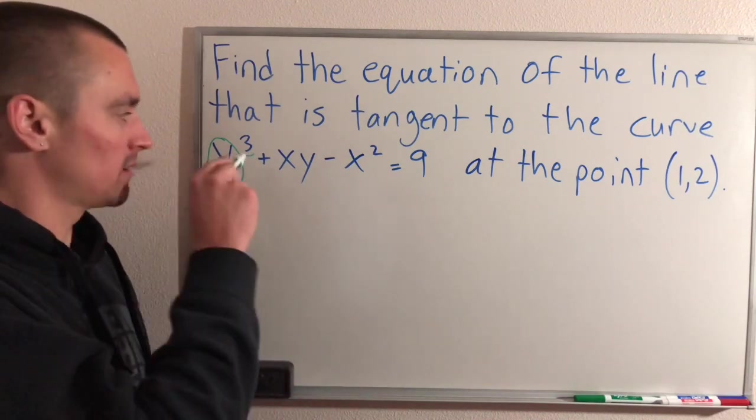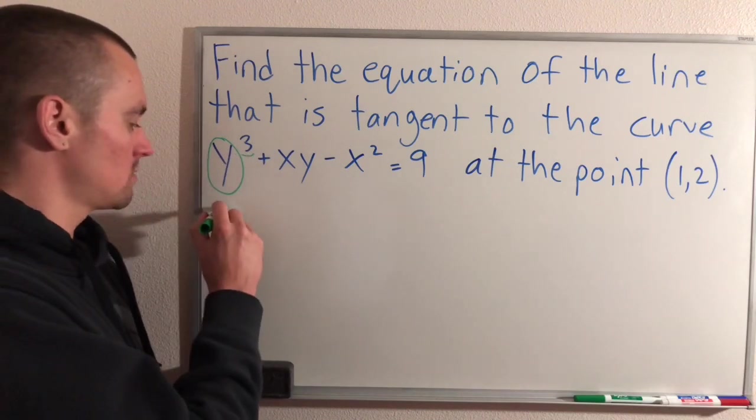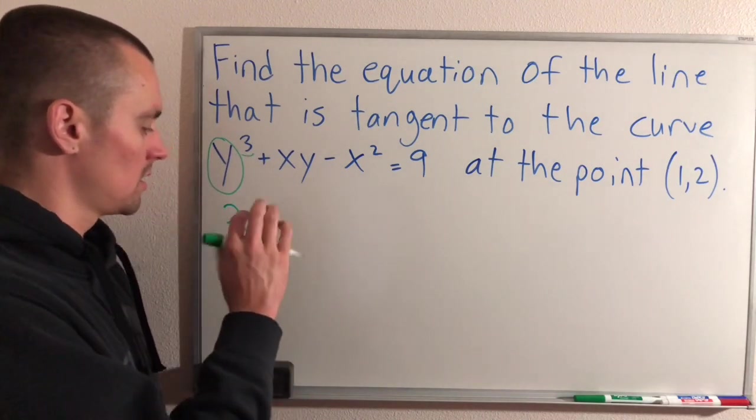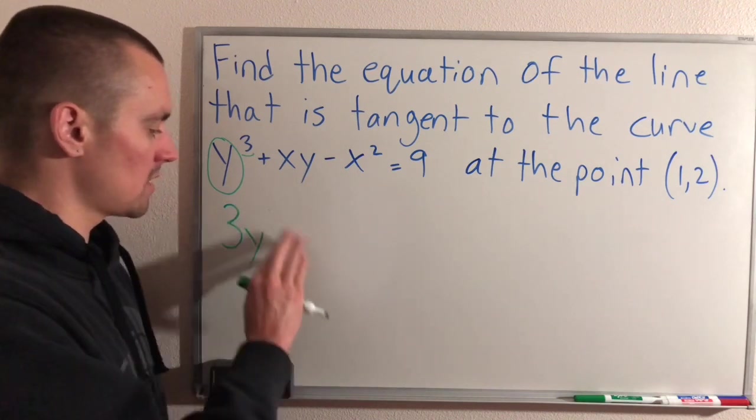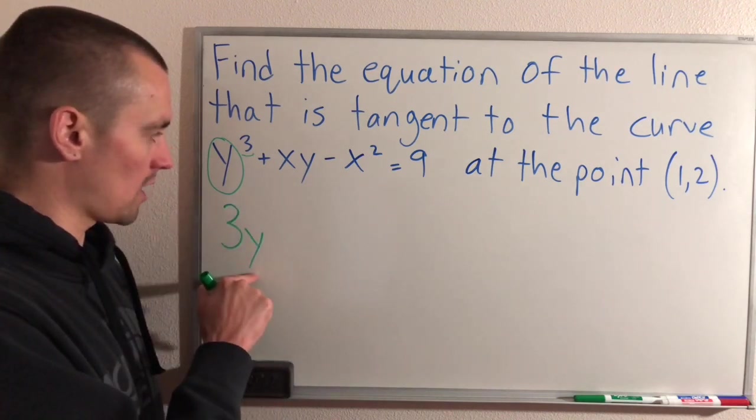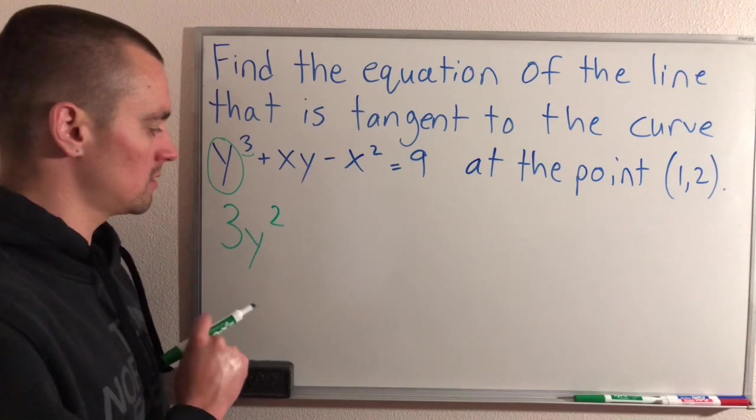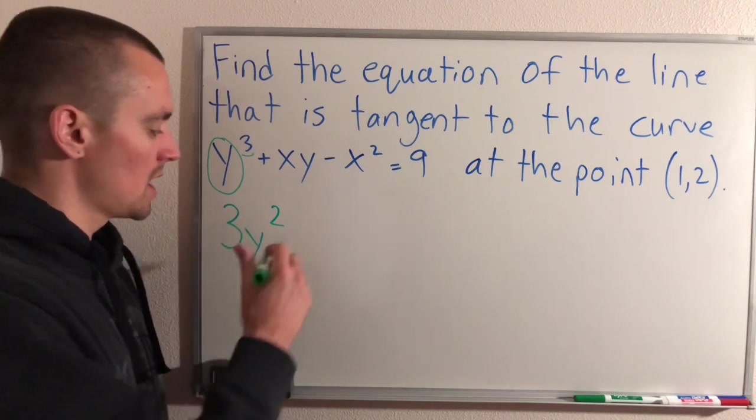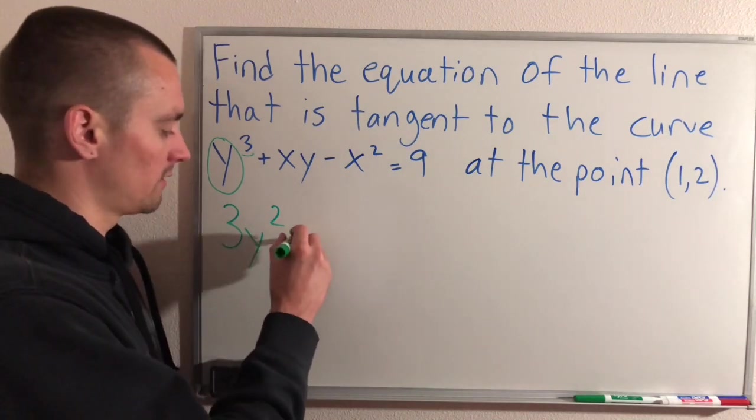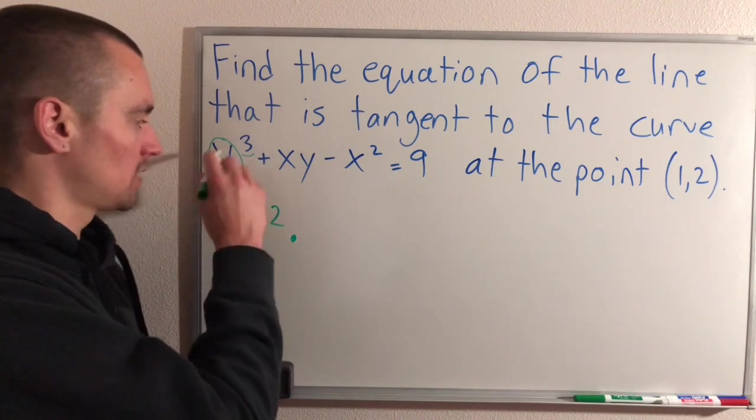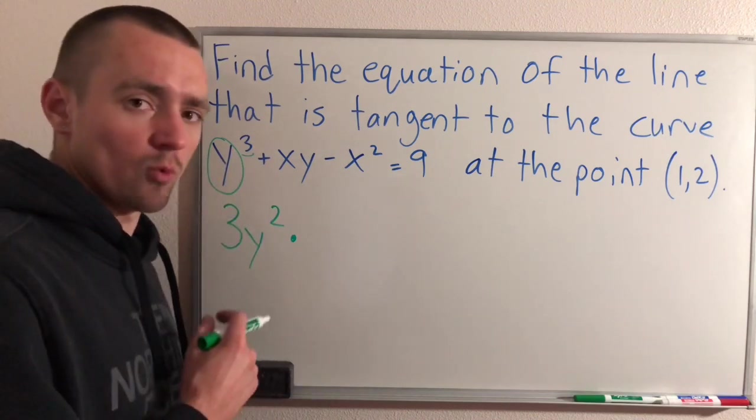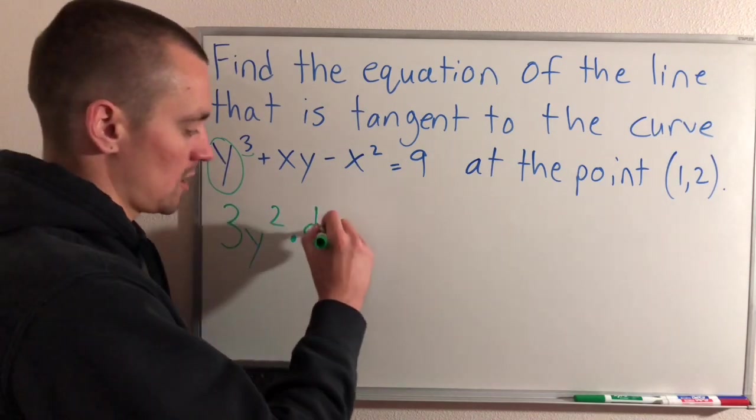So taking the derivative of the outside, leaving the inside alone, it's just going to be power rule, right? Bring the 3 down in front, leave the inside y alone, and lower the power by 1. 3 minus 1 is 2. And then we're going to have to multiply that by the derivative of the inside. Our inside function is just y. The derivative of y is just going to be dy/dx.